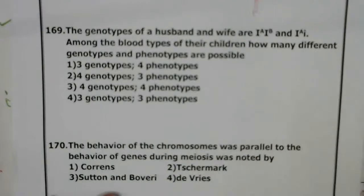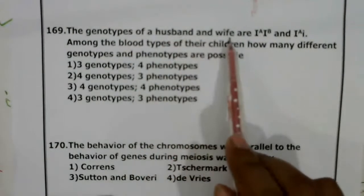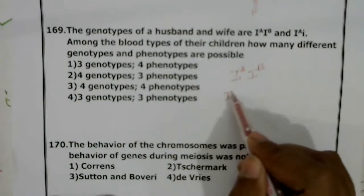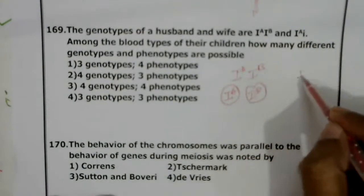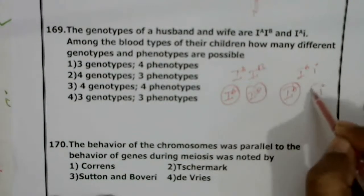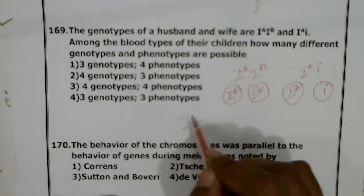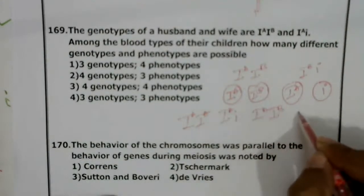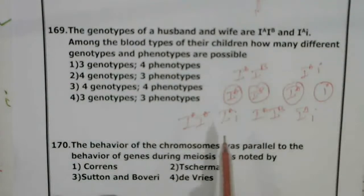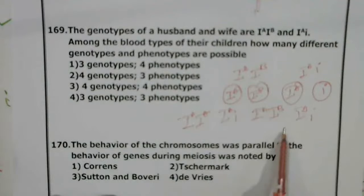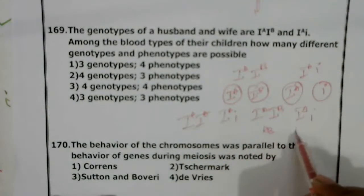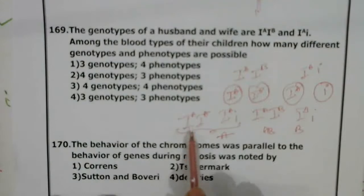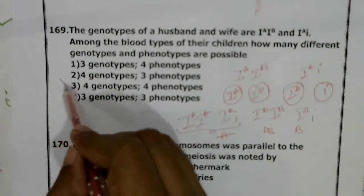Question 169: Genotype of husband is IA IB and wife is IA i. The gametes produced: IA and IB from husband; IA and i from wife. Combining gives four genotypes: IA IA, IA i, IB IA, and IB i. So there are four genotypes. Phenotypes: IA IA gives blood group A, IA i gives blood group A, IB IA gives AB, IB i gives blood group B. So there are three phenotypes. Correct answer: genotype is 4, phenotype is 3.